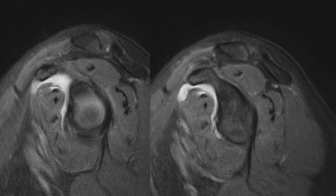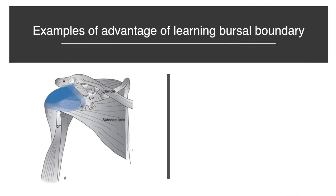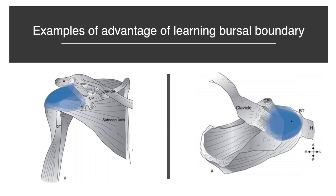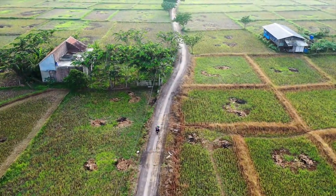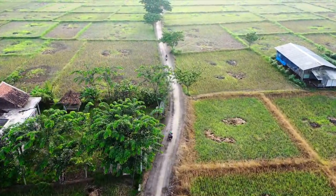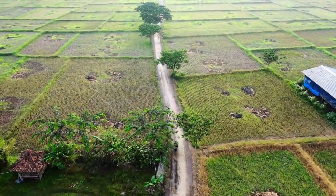The fluid distension of the coracobrachial bursa is not the primary pathology but secondary to intra-articular infusion. Regarding the advantage of learning bursa boundaries: the subacromial bursa space covers a broad area and can deliver drugs to the local area of the supraspinatus and the posterior surface of the coracohumeral ligament, but it cannot deliver medicine to the infraspinatus and subscapularis.